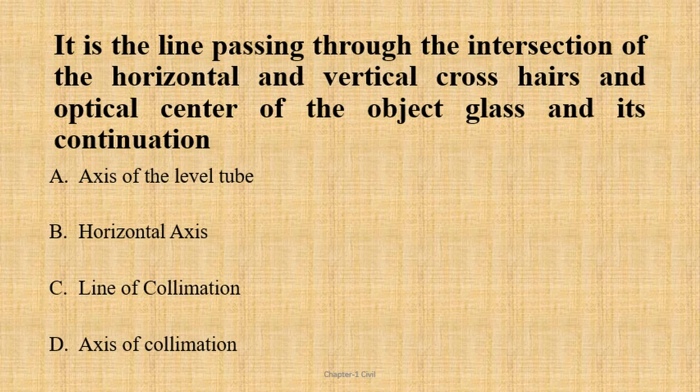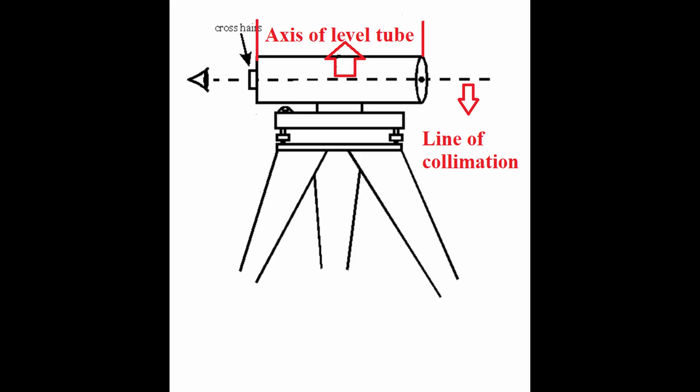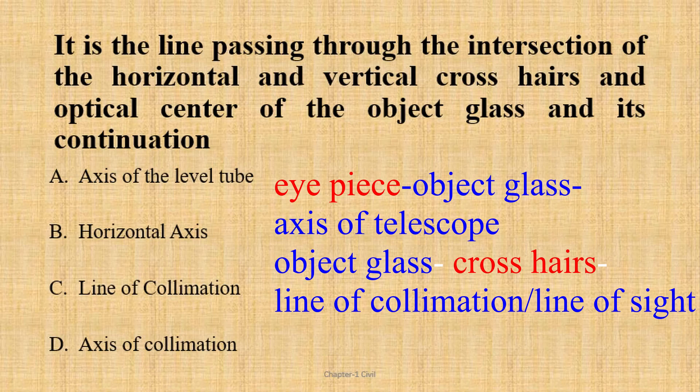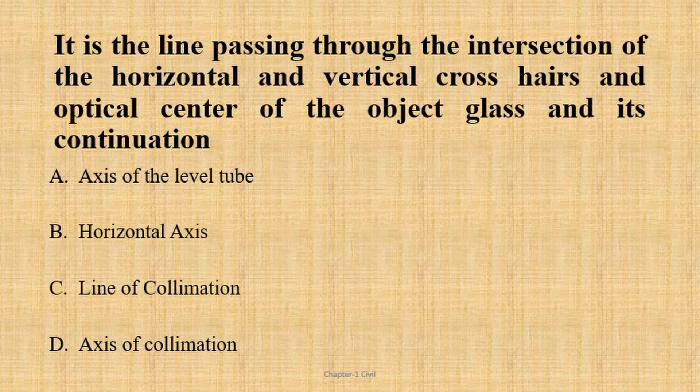The continuation of the line — the line of sight is no other than this. The line of sight is the line of collimation. The axis of telescope is the line from the eyepiece through the object glass. The crosshairs define the object glass reference. The answer is line of collimation.